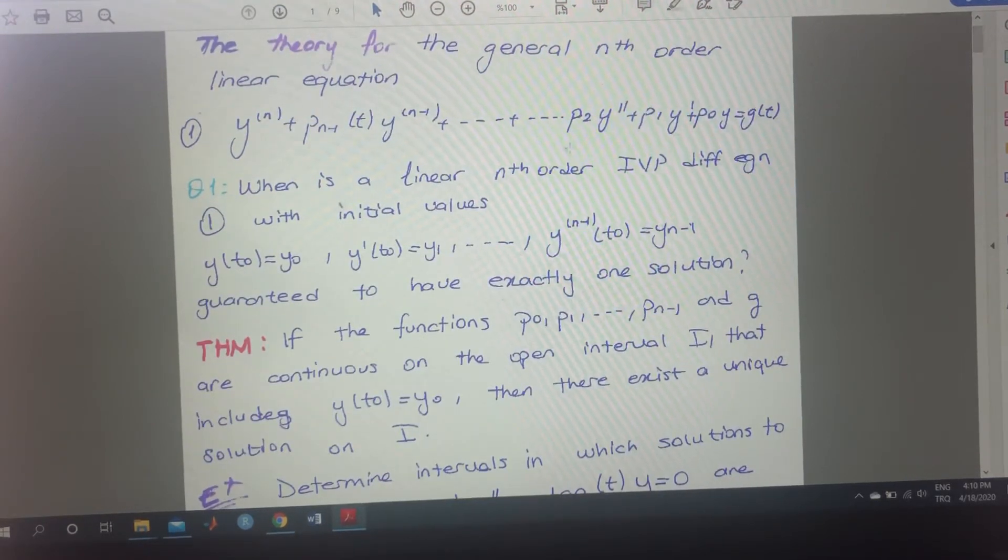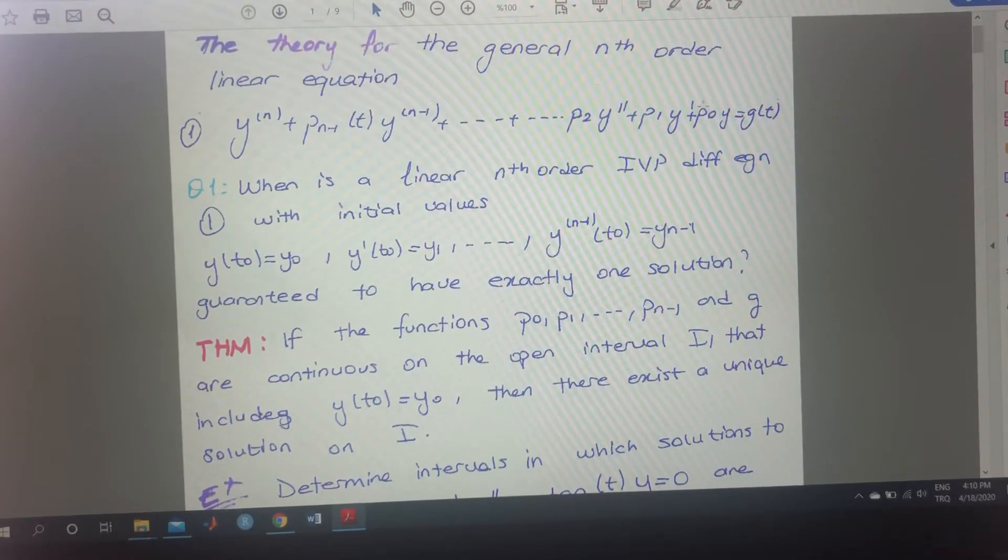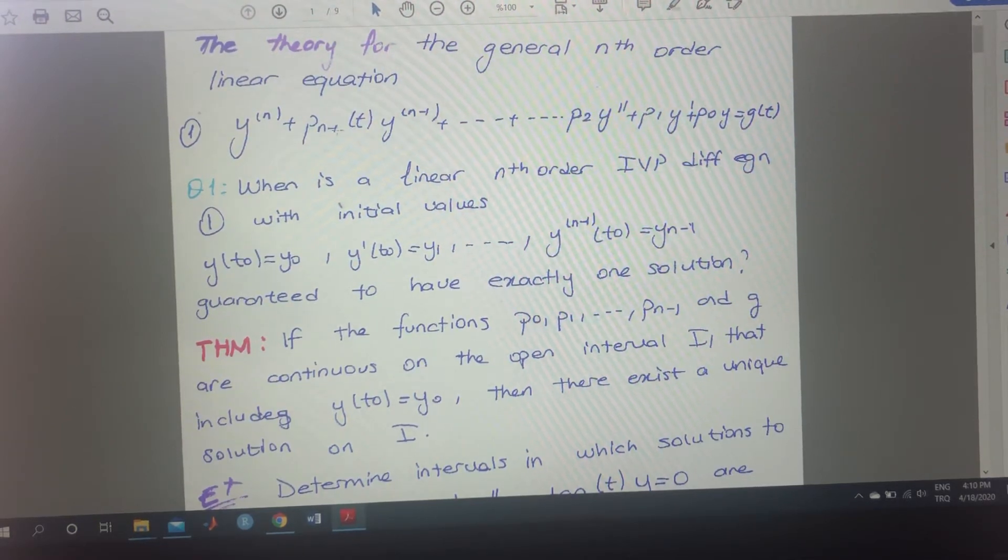You know what are those p0, p1, pn minus 1. Here you go. These are the coefficients: coefficients of y term, first derivative, second derivative, until the n minus 1 derivative, which means that this is the standard form.